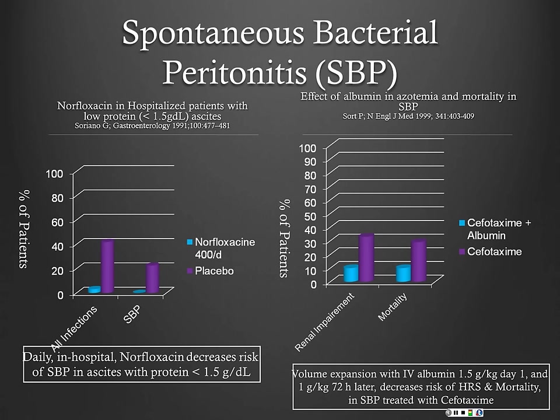Then we give 1 gram per kilogram three days later. This data is specifically for SBP, but we've now extrapolated it to any infection in a cirrhotic. So if they come in with pneumonia or a UTI, we expect they probably benefit from similar albumin therapy — make sure you're giving them appropriate levels of albumin if they're infected.